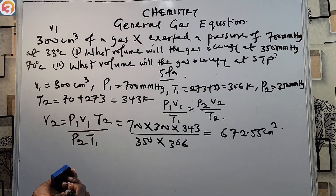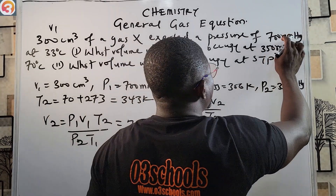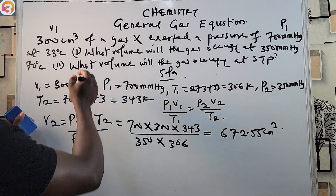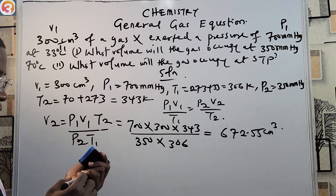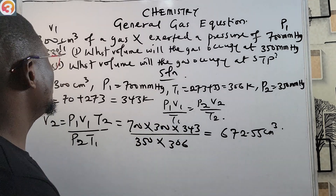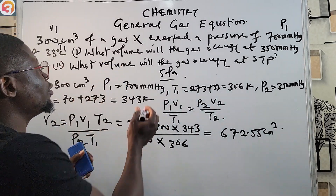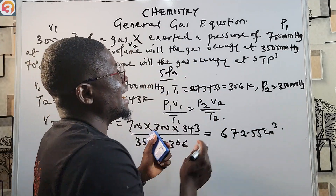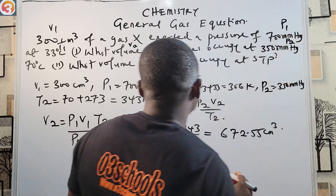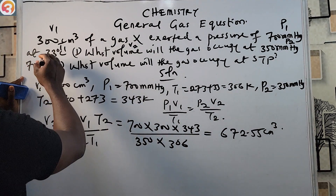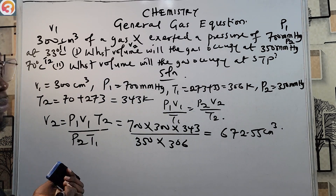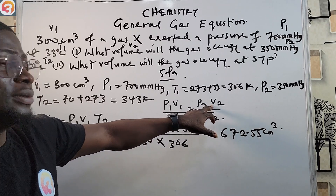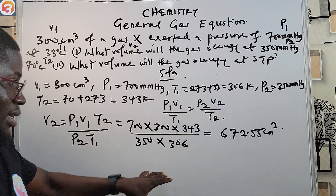To recap: 300 cm³ is V1 (the first volume), 700 mmHg is P1 (the first pressure), and 33°C converted to Kelvin is T1. We are looking for V2 — the volume the gas will occupy at P2 = 350 mmHg and T2 = 70°C. Simply make V2 the subject of the formula, plug in your values, and that is all.